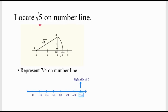Look at root 5 on the number line — how to draw it will be shown. Represents 7 by 4 on the number line. Since the denominator is 4, the numbers are 1 by 4, 2 by 4, 3 by 4, 4 by 4 which is 1, 5 by 4, 6 by 4, and 7 by 4 on the number line.